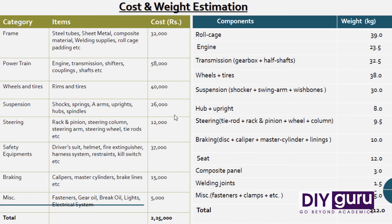This cost you have obtained from vendors. The next section contains the detail of components — you input what all components are there in your car, and then in the next column you input the weight that you have gathered from researching on the internet.